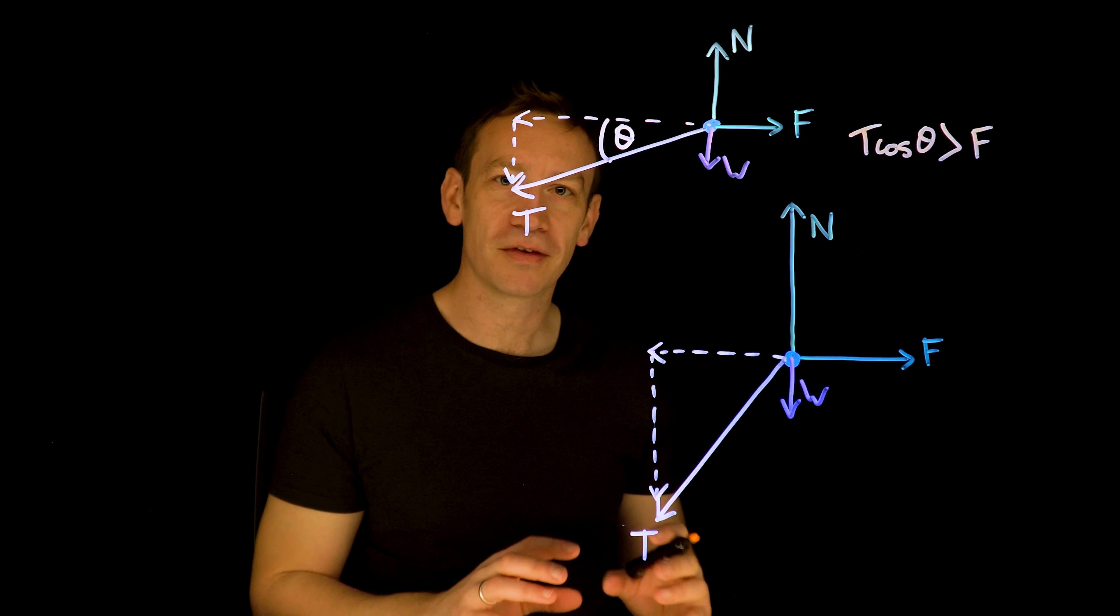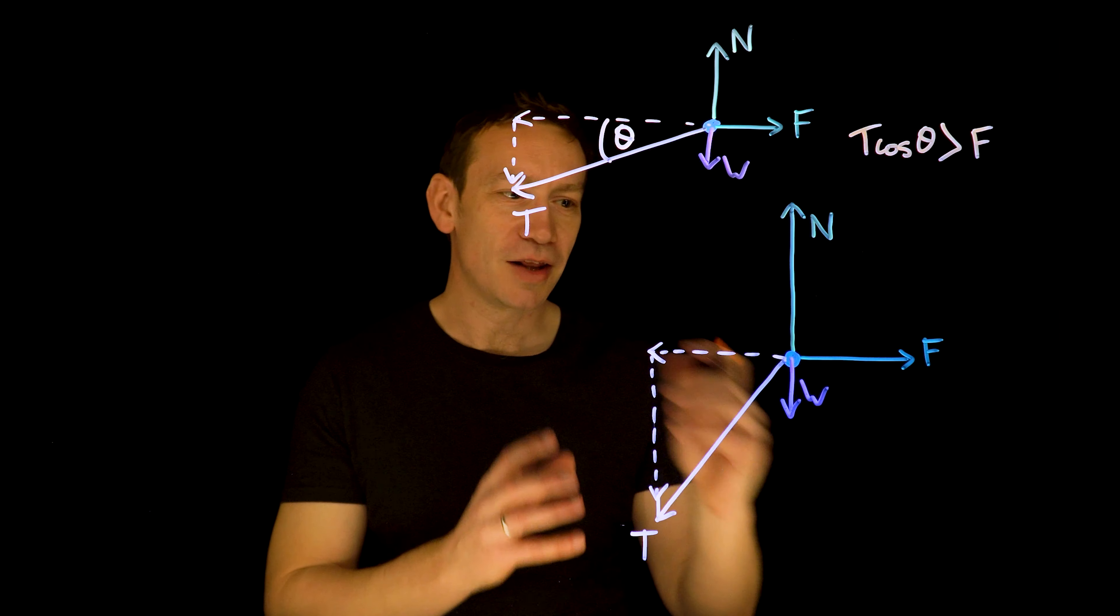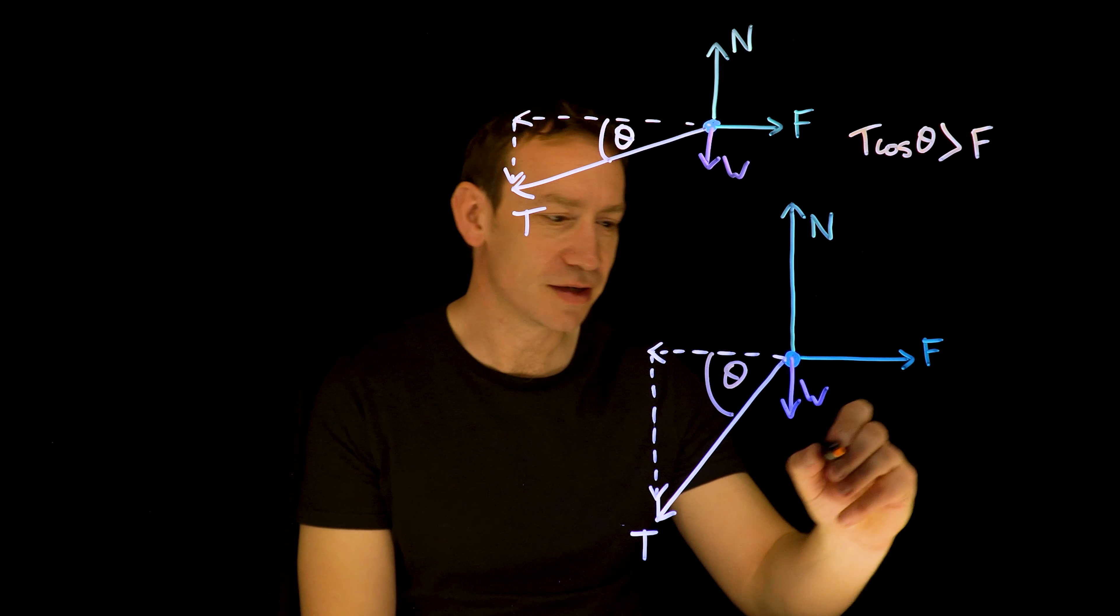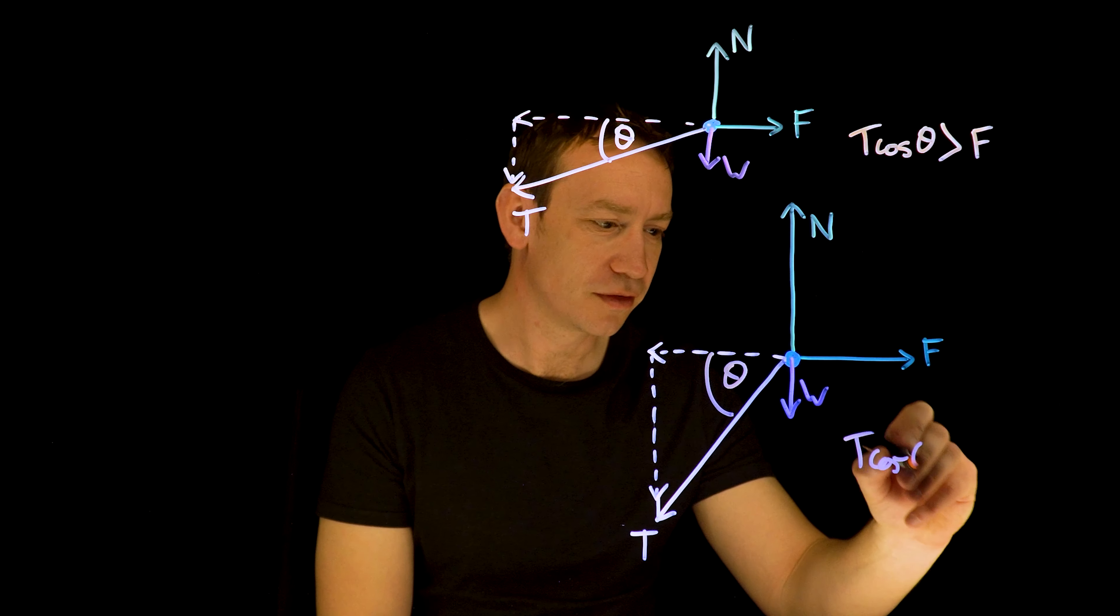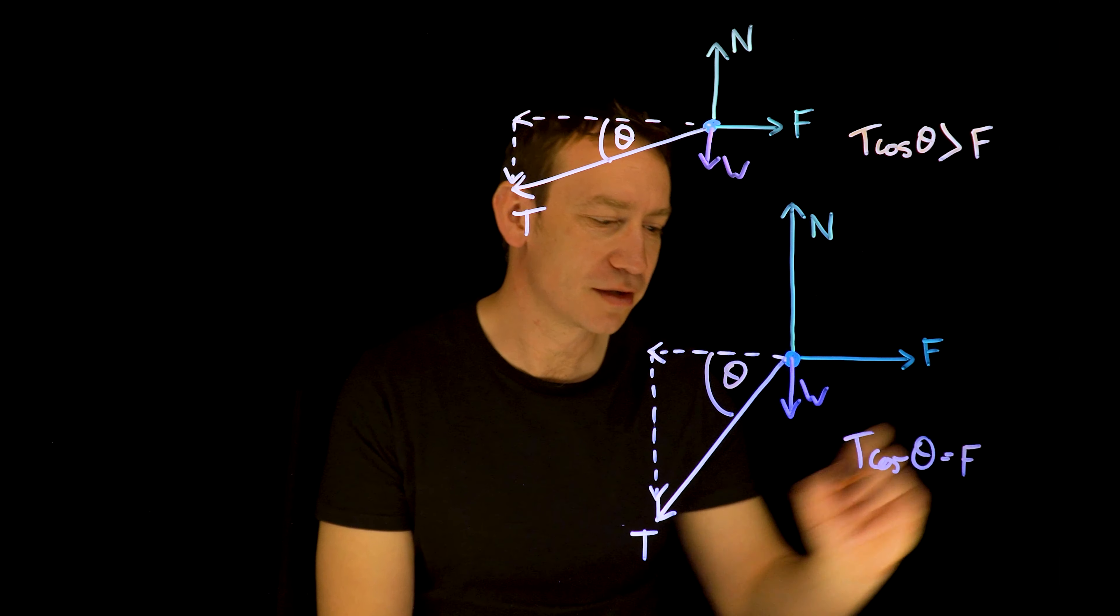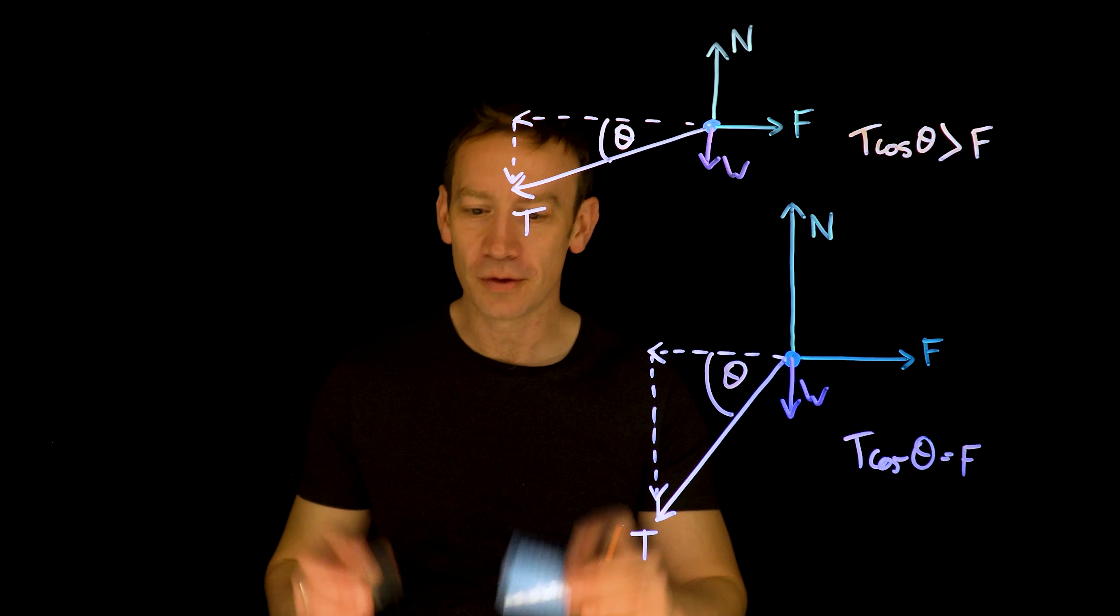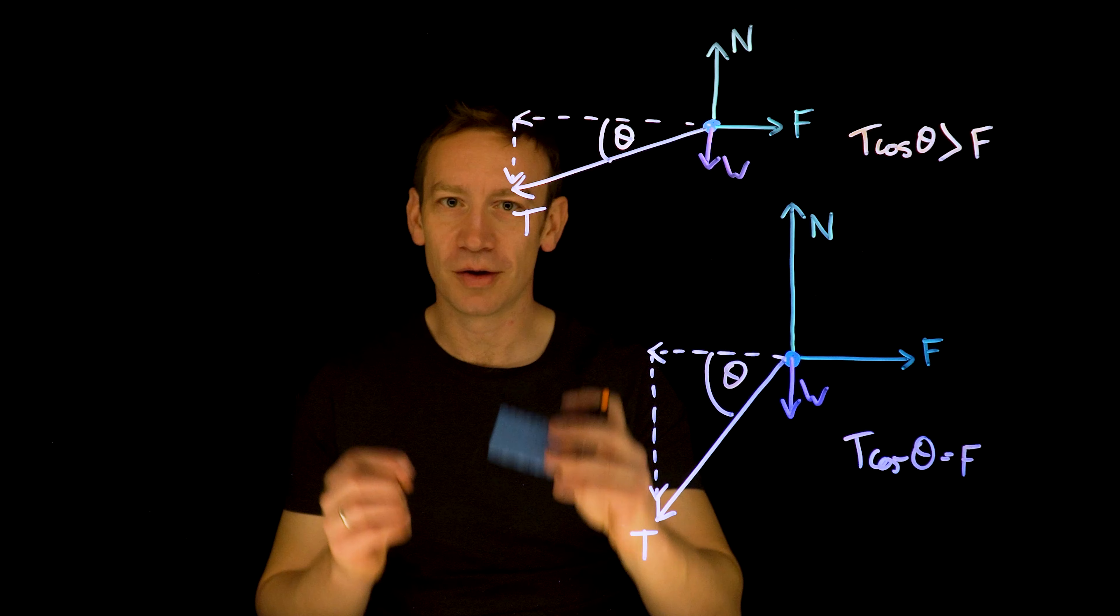But at the end we've got something which has stopped moving, and the reason for that now, if this angle here is theta, is that T cos theta is now equal to that frictional force, and therefore at this particular time it's not moving.